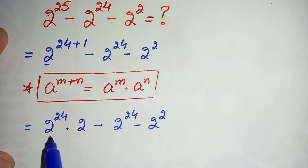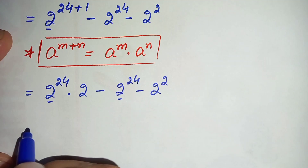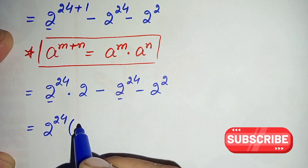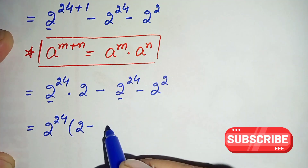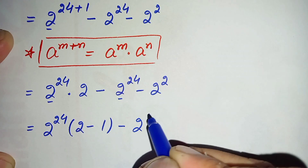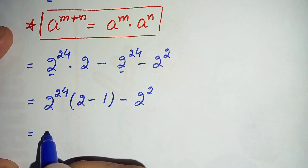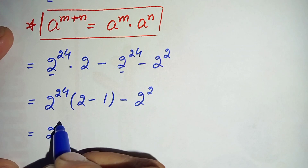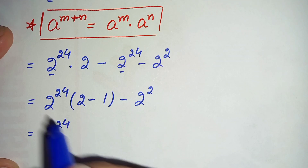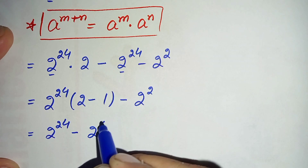Now from these two terms we will take 2 raised to power 24 as a common factor. So taking 2 raised to power 24 common: 2 is left minus 1 is left, giving us 2 minus 1. Since 2 minus 1 is 1, this becomes 2 raised to power 24 times 1, and any number times 1 is the same number, so this becomes 2 raised to power 24, minus 2 raised to power 2.